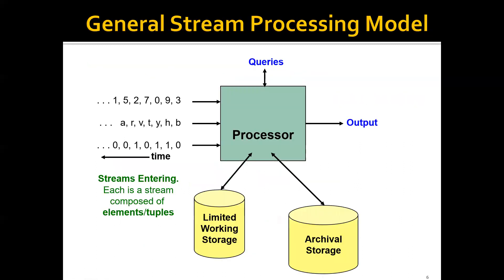In the general stream processing model, streams of data come from users — each line representing a data stream composed of elements or tuples. We have a processor to handle all these data streams, along with limited working storage (like memory for the processing algorithm) and archival storage for external data. Queries come from users, the processor handles them, and results are returned as output.